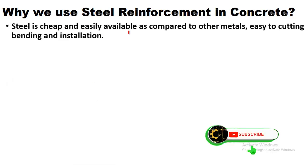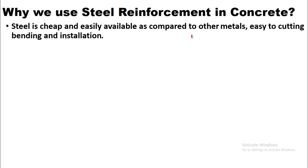Steel is cheap and easily available as compared to other metals. This is the answer to the question of why steel and why we do not use other metals like aluminium, copper, zinc, etc. — because it is easily available and cheaper, and it is easy to cut, bend, and install, and it also has good weldability.